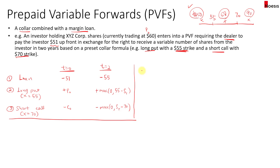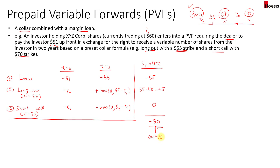With a share price of $50, the loan payoff is still negative $55. The long put is in the money: $55 minus $50 equals $5. The call is out of the money, so the net payoff is negative $50. The investor pays back $50 to the dealer, either in cash or in shares.